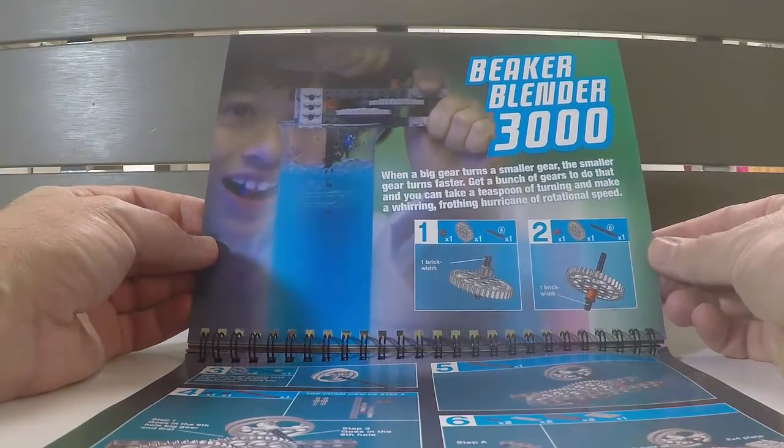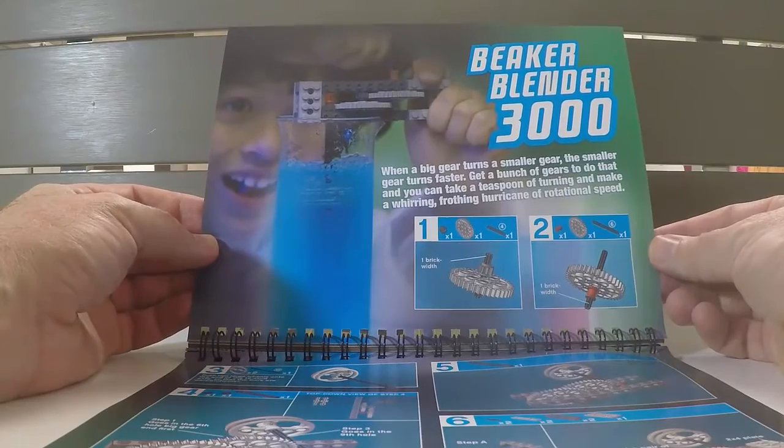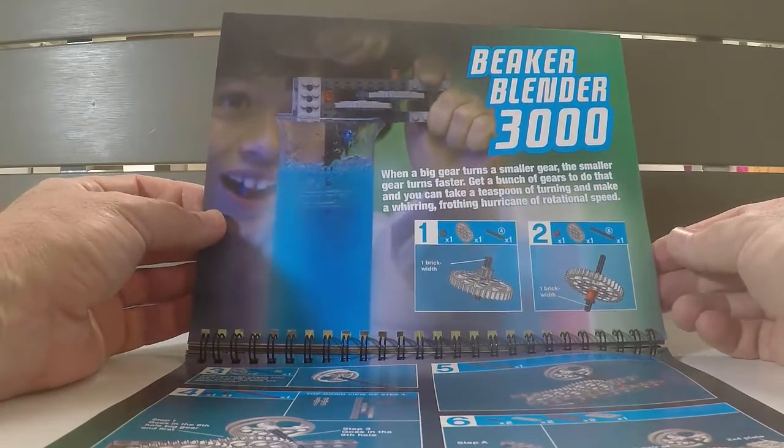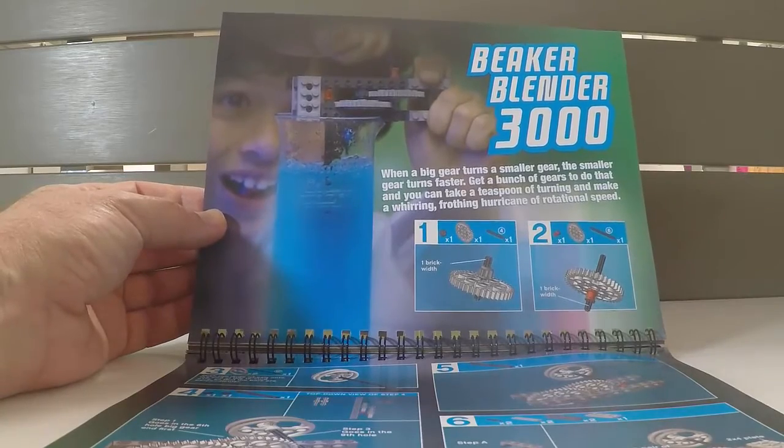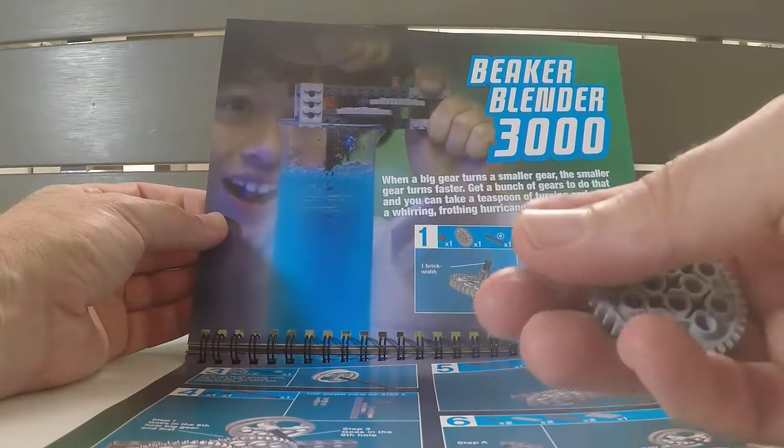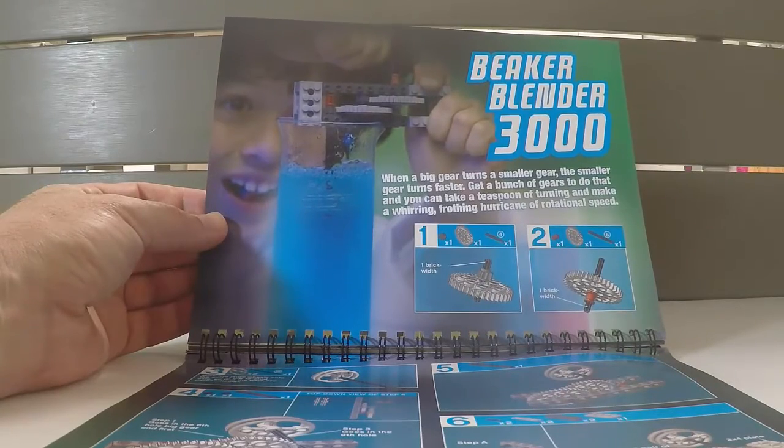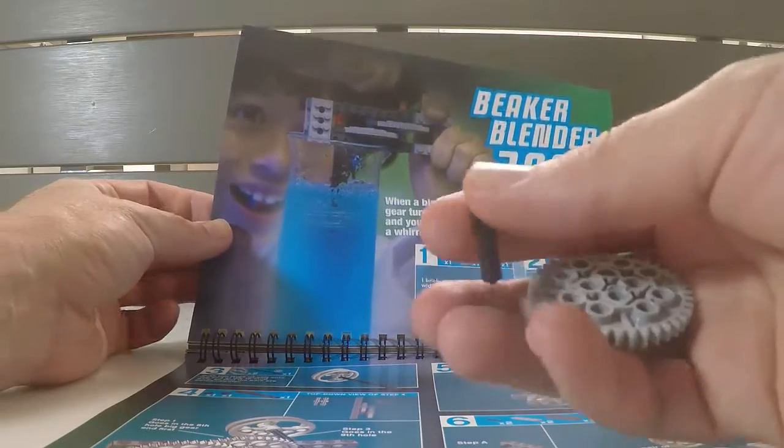Okay, I've managed to get the parts together so I'm ready to get started with the Beaker Blender 3000. So first of all we need a couple of gears, one large, one little one, and an axle.